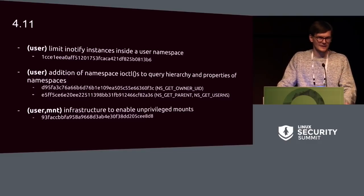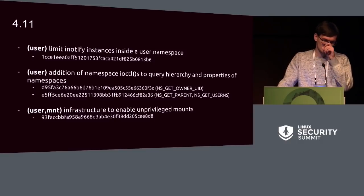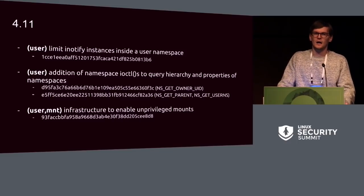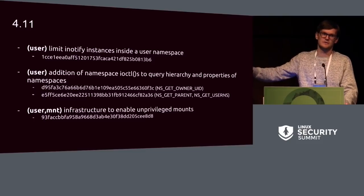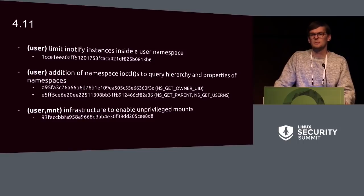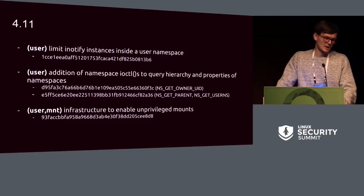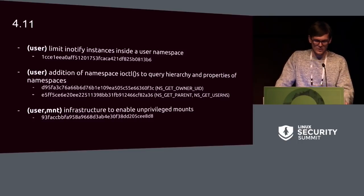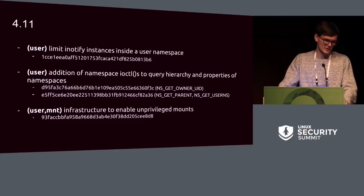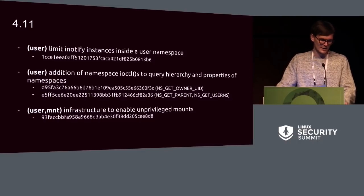Michael added new namespace ioctl infrastructure to query the hierarchy and properties of namespaces — for example, you can ask what UID the creator of a specific user namespace has, which helps answer whether you have privilege over that user namespace. You can also get the parent of any hierarchical namespace, which only applies to PID and user namespaces: give it an FD to a PID namespace and it returns an FD to the parent. NS_GET_USERNS gives you the owning user namespace for any non-user namespace FD. Further work on infrastructure to enable unprivileged mounts also continued in 4.11.